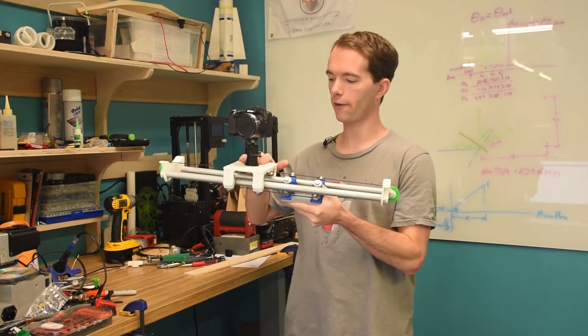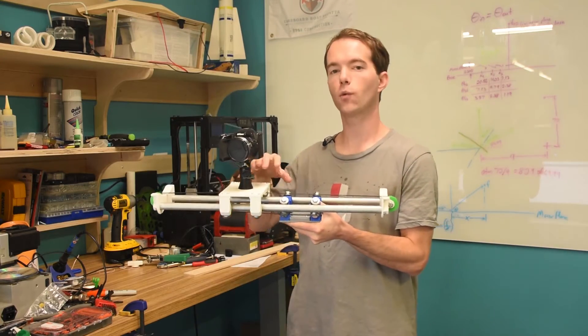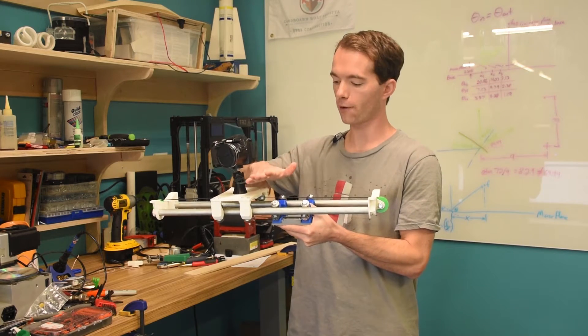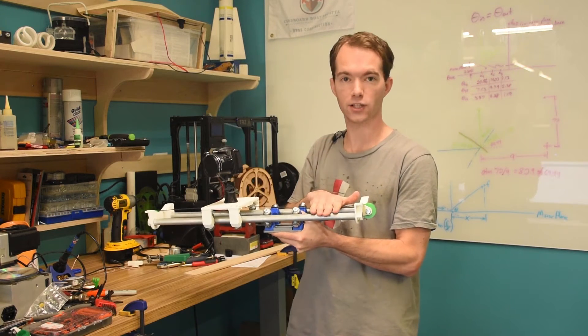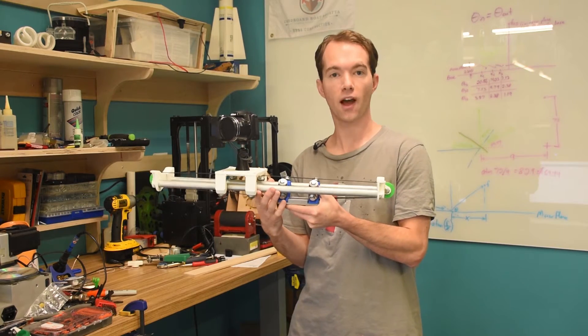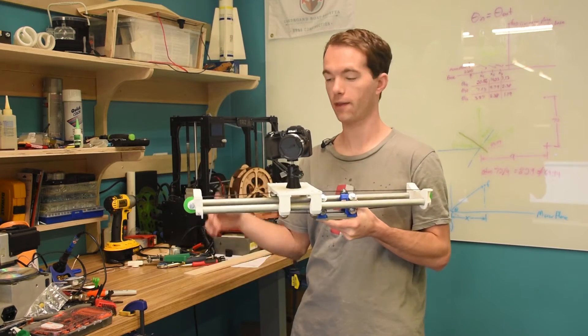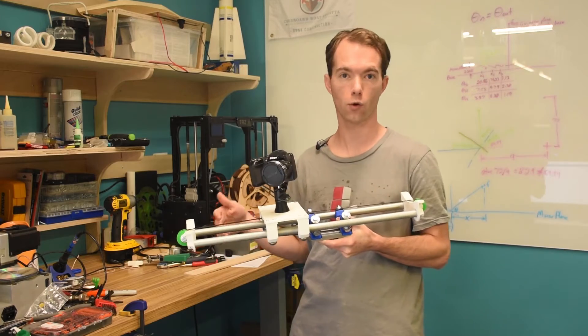I've got the larger platform on top, because if something were to fail on the bearings, then the platform falls and just simply hits the rails. Whereas if it were the other way, it could fall through, and then the camera could end up hitting the rails or hitting the ground.